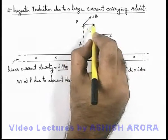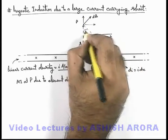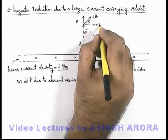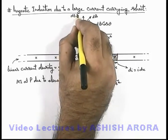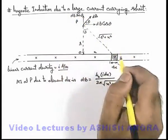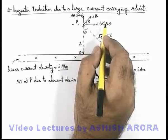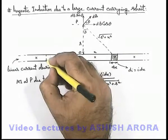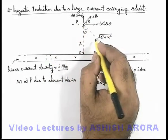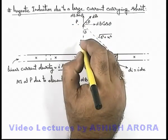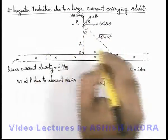In this situation, this magnetic induction will have 2 components. If this angle is theta, this is also theta, this will be dB cos theta and this will be dB sine theta. In this situation, due to the whole sheet net induction will be in horizontal direction. So if we consider a similar element on the other side, magnetic induction will be in downward direction and dB sine theta will cancel out, and dB cos theta will be added up for both of these symmetric elements.